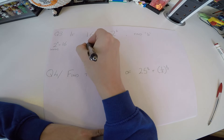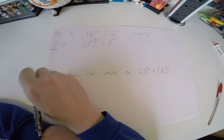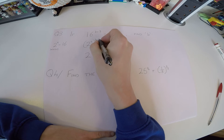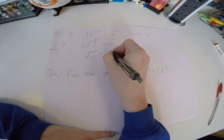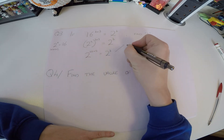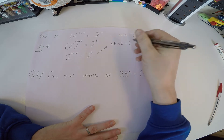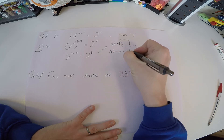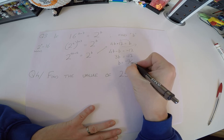So we change 16 to 2 to the power of 4, raised to (b + 3), still equal to 2 to the b. Power to a power — we multiply — giving 2 to the (4b + 12), equal to 2 to the b. Same base, so equate powers: 4b + 12 = b. Bringing terms across: 3b = −12, so b = −4.